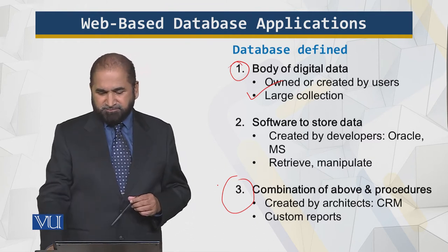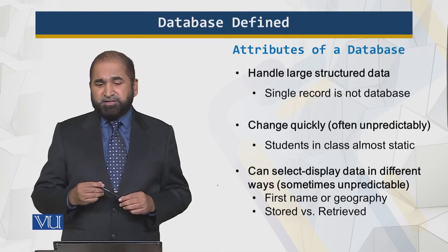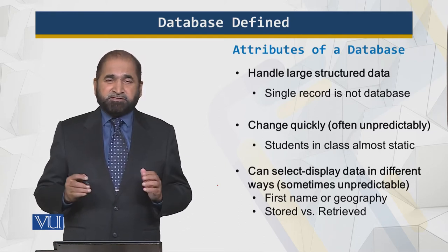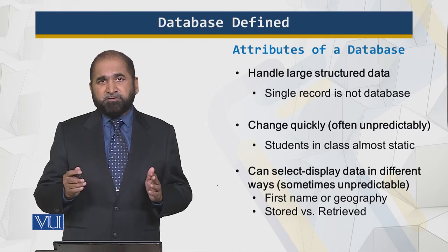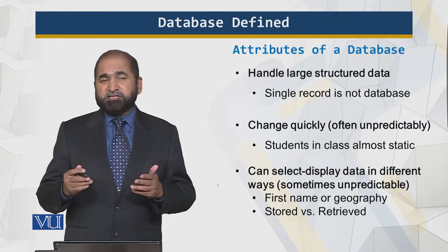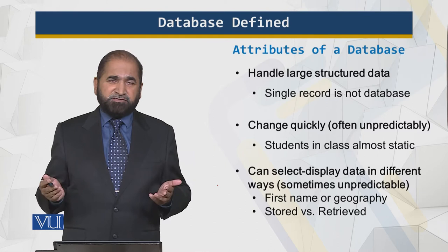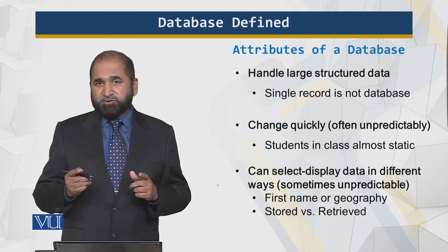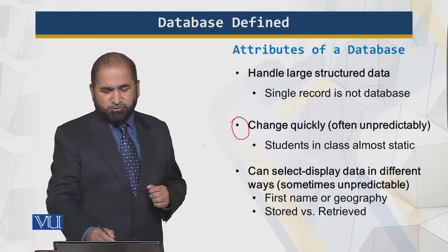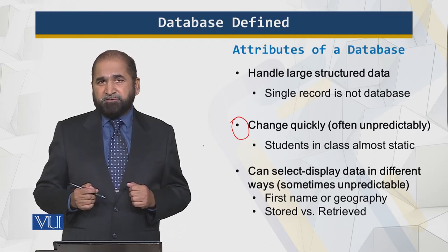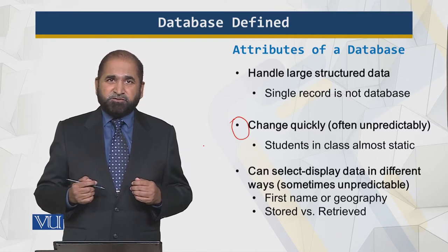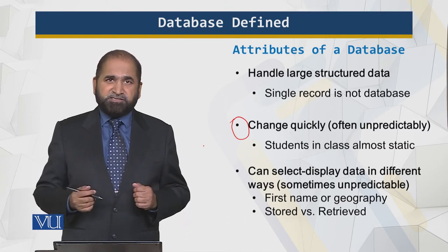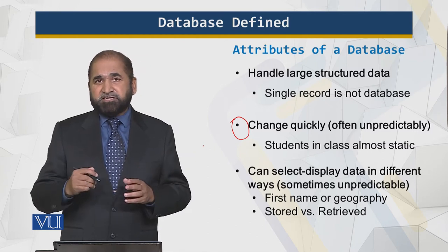So, what are the attributes of a database? It handles large structured data, not unstructured data. Structured data means that we know this is the name, this is the ID, and the ID of a student is numeric — and it goes into the corresponding locations in the database. A single record is not a database. Database changes quickly. The students in a class don't change a lot during the semester. But in a true database, things are changing very quickly.